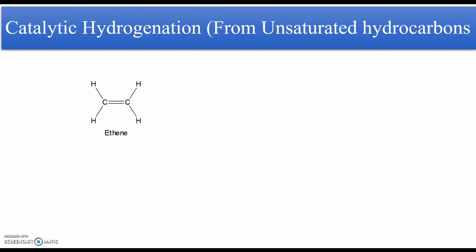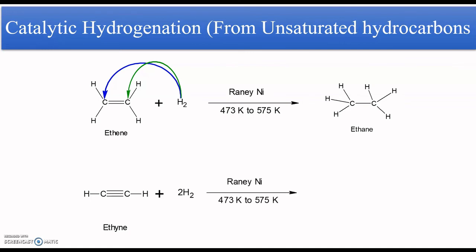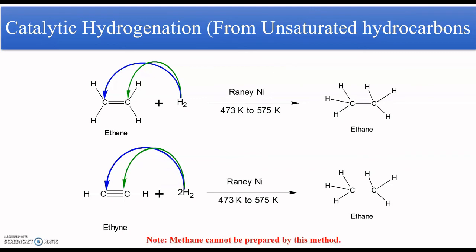For example, ethene contains a carbon-carbon double bond. On reaction with hydrogen in the presence of Raney nickel at the given temperature, two hydrogens are added across the double bond to give ethane. Similarly, if we carry out this reaction with ethyne, two molecules of hydrogen are required since there is a triple bond, giving the corresponding ethane.